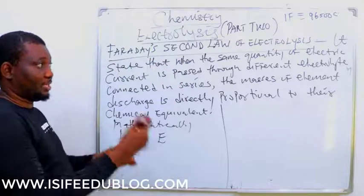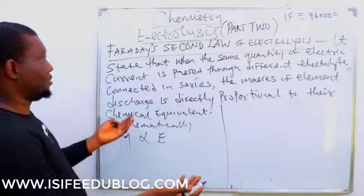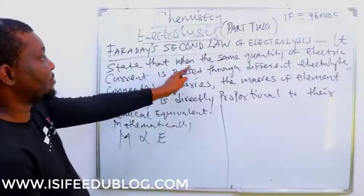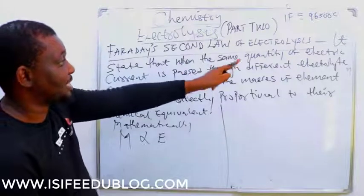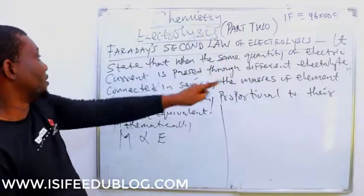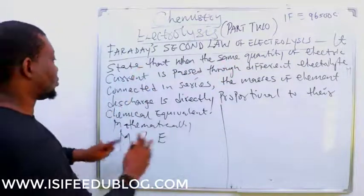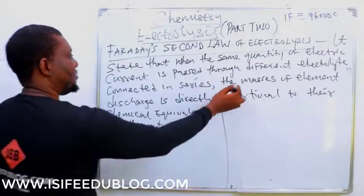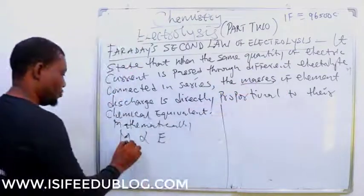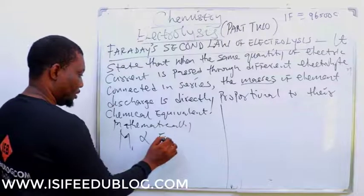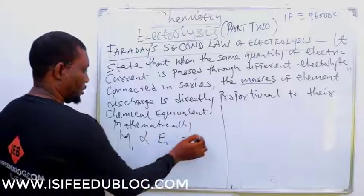We have different masses because here you have to be specific. It states that when the same quantity of electric current is passed through different electrolytes connected, so since we have different masses, here will be M1, here will be E1. Let me just call this equation 1.